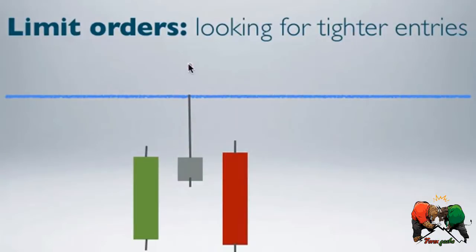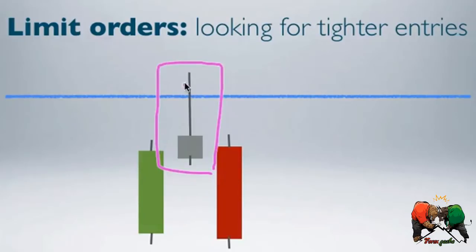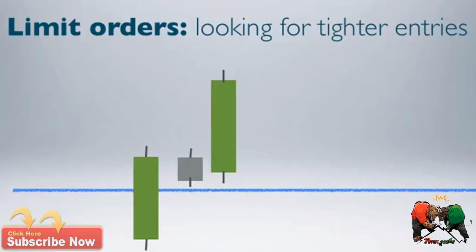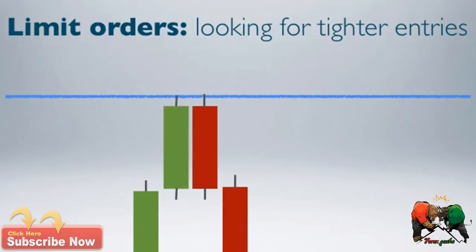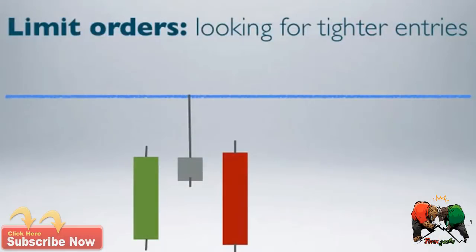For reversal formations, whether in the shape of a pin bar, railway tracks, or a fake breakout formation with a wick breaching through a key level of support and resistance, or even in continuation patterns, what we've seen so far is to set our entry just beyond that key bar used for our entry. For simplicity, I'll go back to the typical pin bar formation to explain, but you can apply the same concepts to any of the formations we've seen.